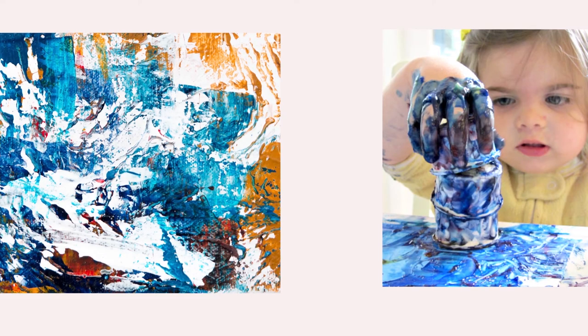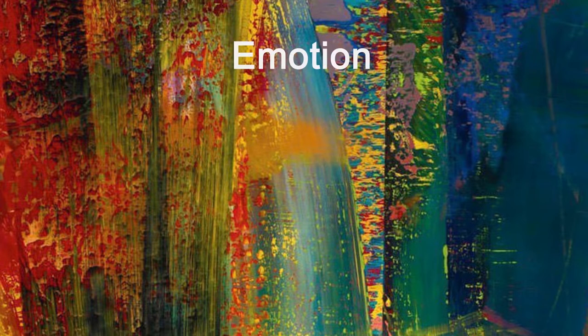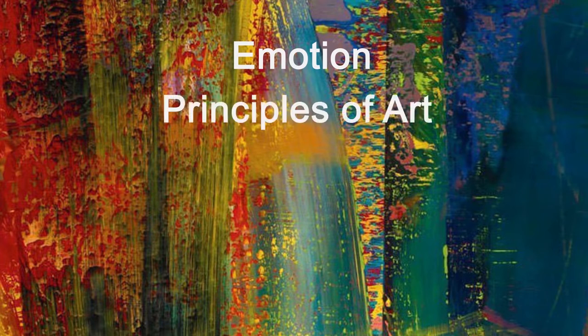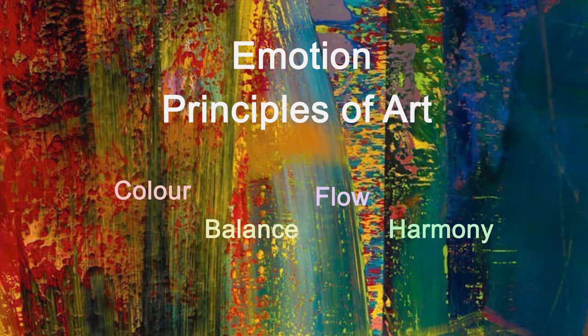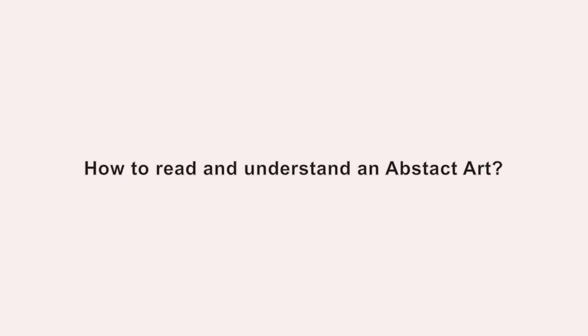with children's art or considered as only random lines or strokes. They primarily carry the emotion of the artist and it is conveyed through the art. While painting an abstract painting, the artist keeps all the principles of art like color, balance, flow, harmony, and other visual elements in mind.